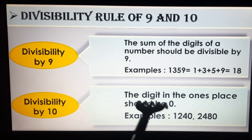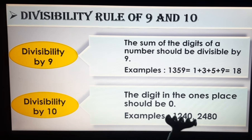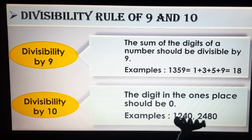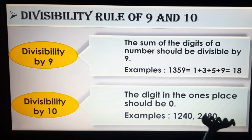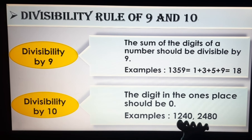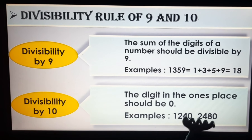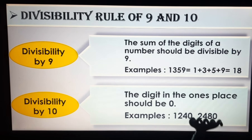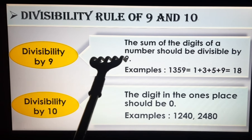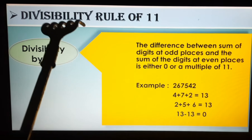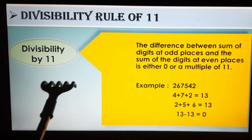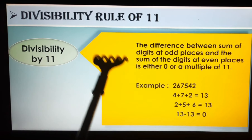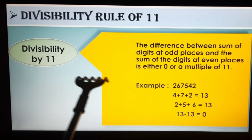Now, Divisibility by 10: the digit in the ones place should be zero only. While checking divisibility by 10, the ones place digit must always be 0 and nothing else. For example, 1240 is divisible by 10, and 2480 is also divisible by 10.